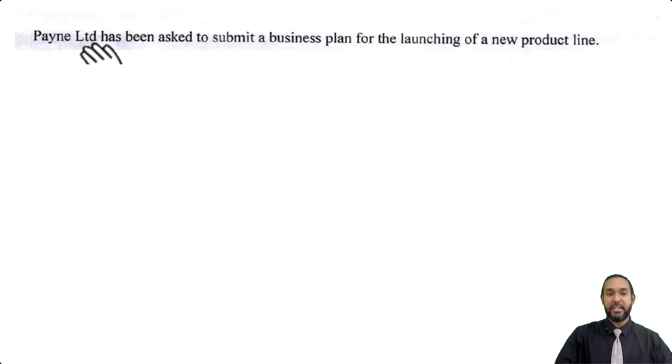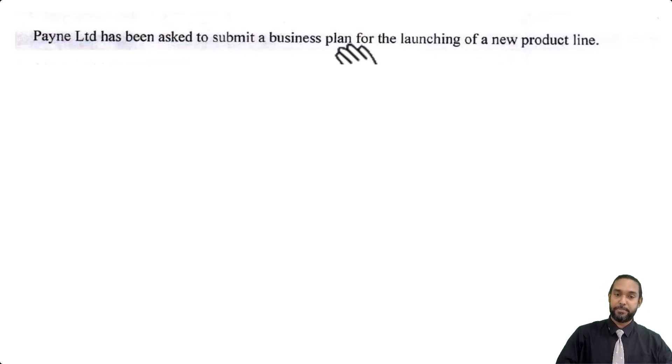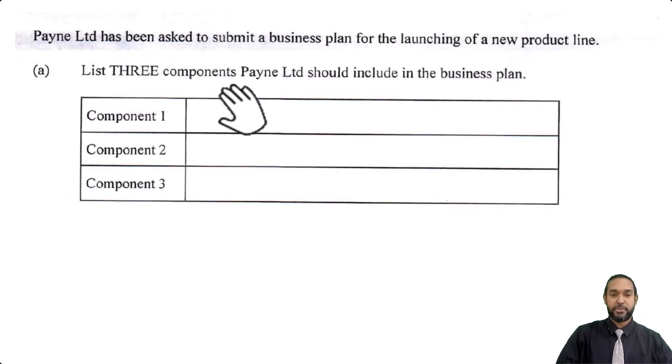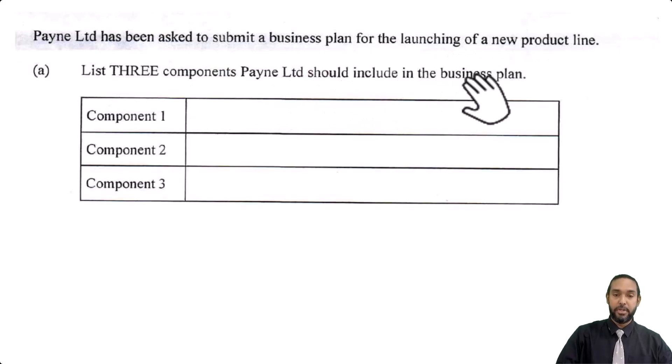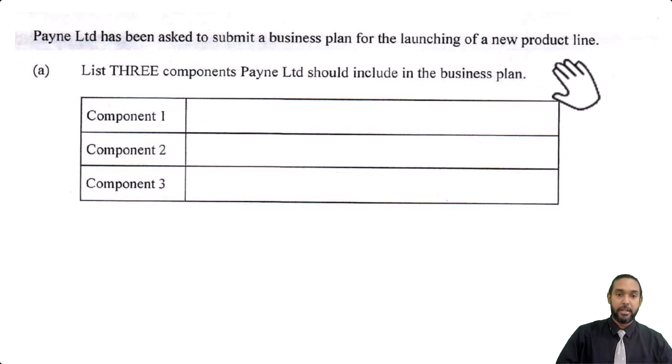So the question reads: Payne Limited has been asked to submit a business plan for the launching of a new product line. There are three components Payne Limited should include in the business plan. Just a personal opinion — business plan should not be on a POA syllabus; it should be on a POB syllabus. Anyhow, let's give it.